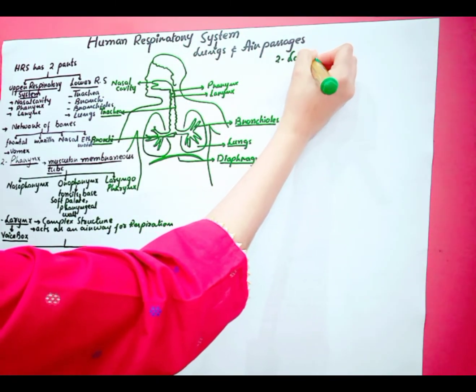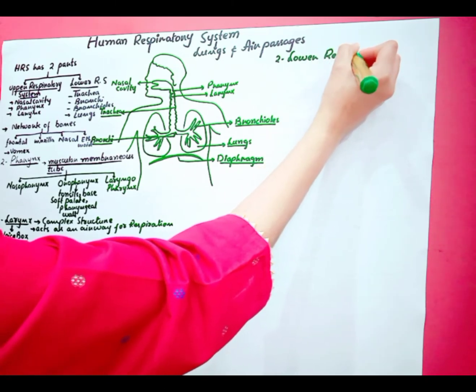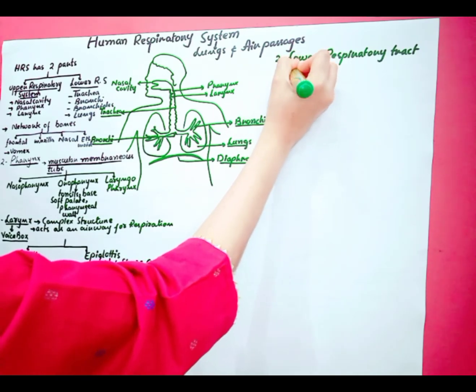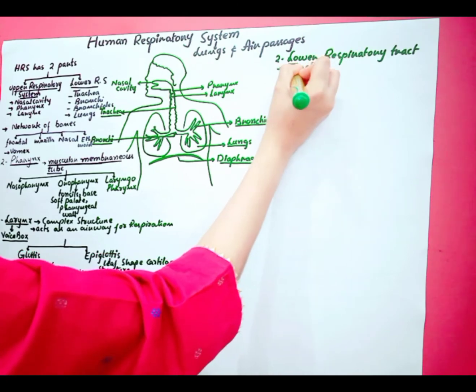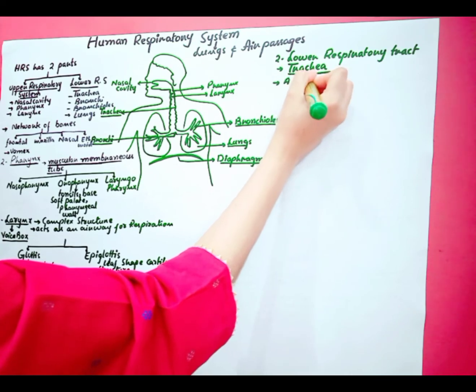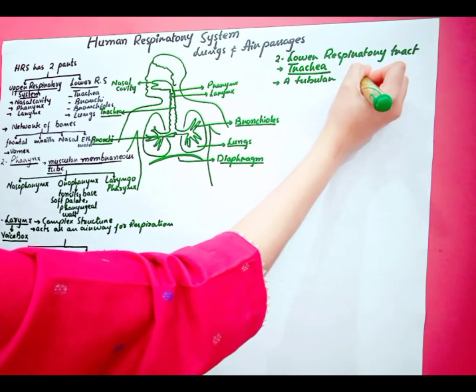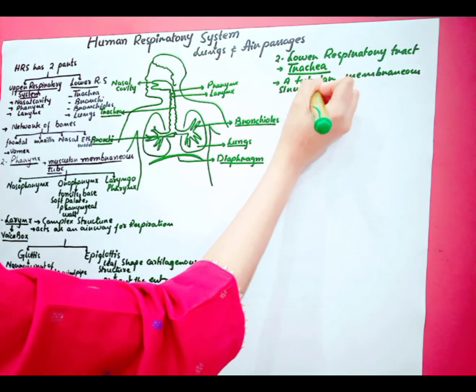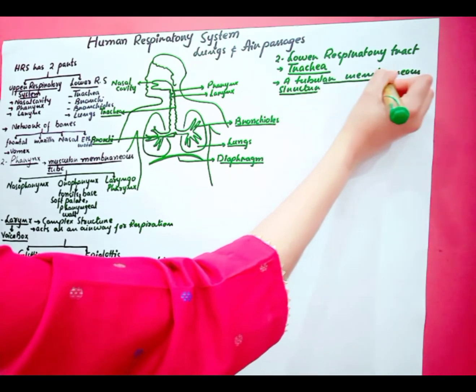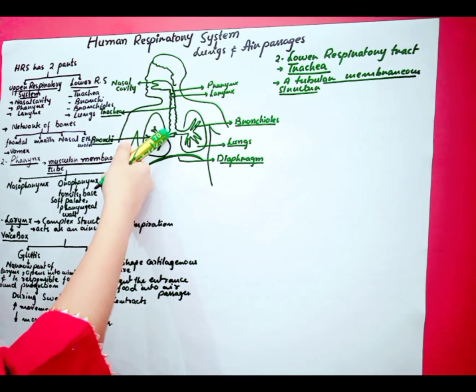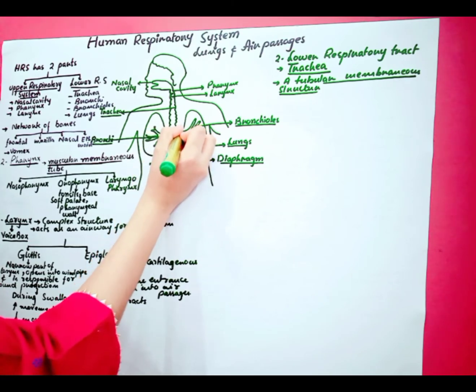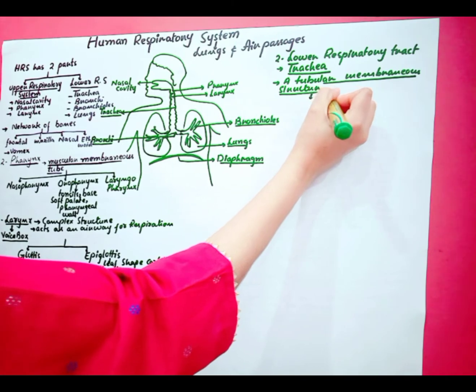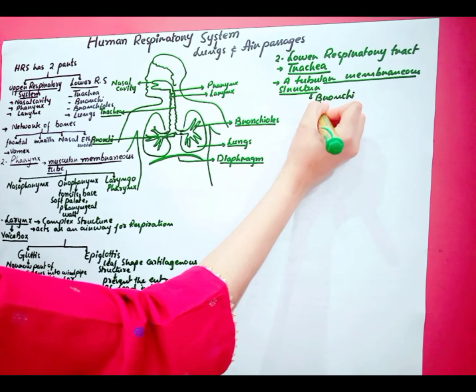Lower respiratory tract. The first part of lower respiratory tract is trachea or windpipe. This trachea is a tubular membranous structure. This trachea is branched up into bronchi. The structure which enters into the lungs. The bronchi is further branched into bronchioles.